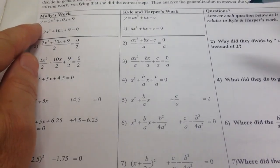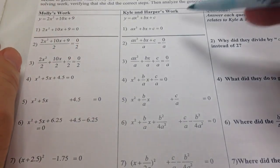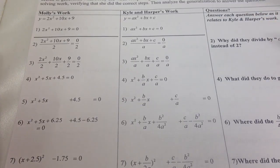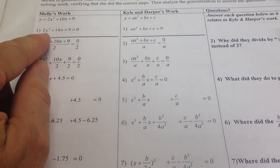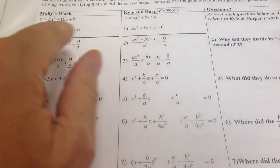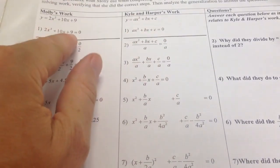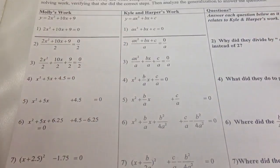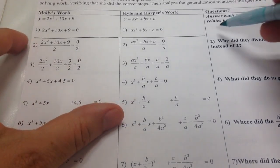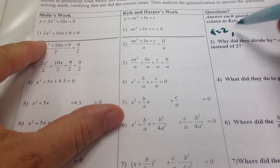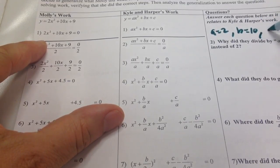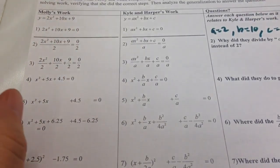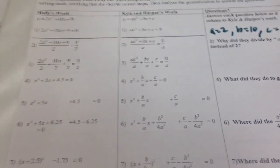So in the first one here, Molly has got 2x² + 10x + 9, and Kyle and Harper have y = ax² + bx + c. So that's our first line. And basically, in this case, Molly's 2 matches up to this a, Molly's 10 matches up to this b, and Molly's 9 matches up to the c. So anything Molly does with these numbers, Kyle and Harper should do the same thing with these letters that represent numbers. So basically, maybe our answer there is a = 2, b = 10, and c = 9. If those had had negatives in front of them, I would attach the negatives to those.